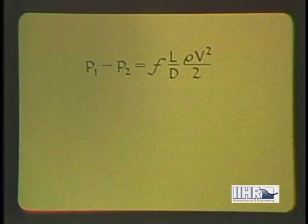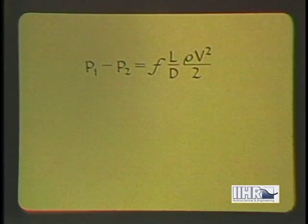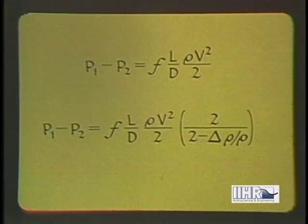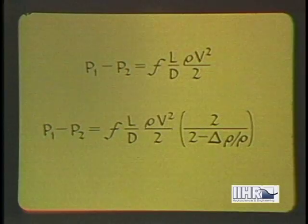In flow with constant density, the pressure drop varies according to the usual Weisbach equation. If the change in density is appreciable, however, the pressure drop will be increased in accordance with the density change, as indicated by the term within parentheses.